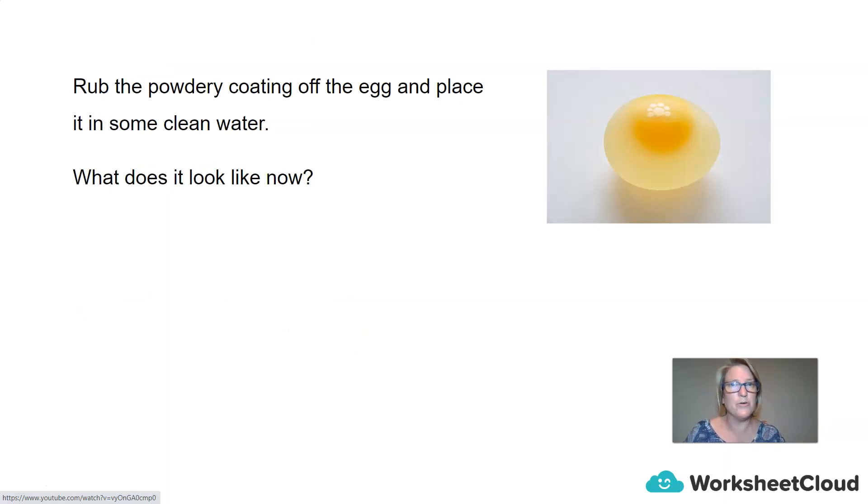So you can rub the powdery coating off the egg and you can place it in some clean water. And what does it look like now? So it should feel quite rubbery and if you look at it really carefully you should be able to see the yolk of the egg on the inside and the white of the egg on the outside, but it's probably not white. It's probably gone a yellowy type of color.